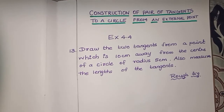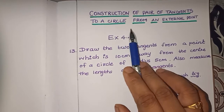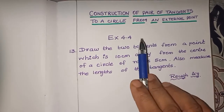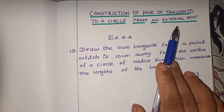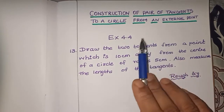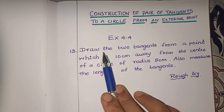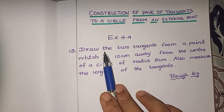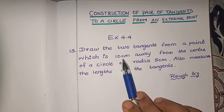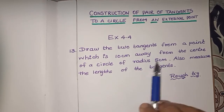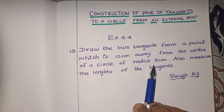10th standard construction: construction of a pair of tangents to a circle from an external point. This is a very very important construction. Exercise 4.4, 13th question. Draw the two tangents from a point which is 10 cm away from the center of the circle of radius 5 cm. Also, measure the lengths of the tangents.